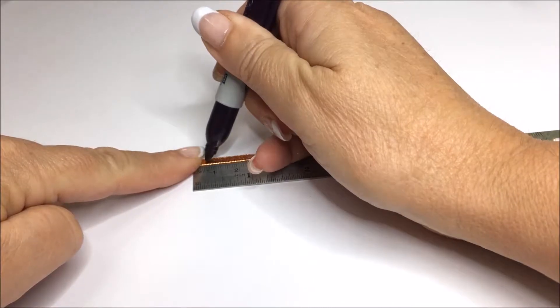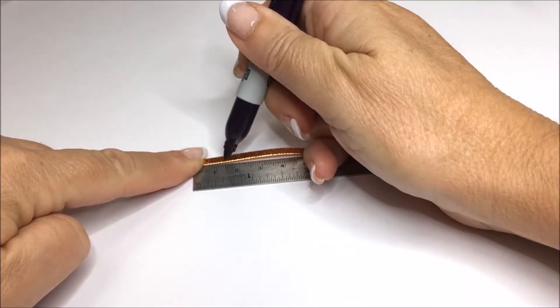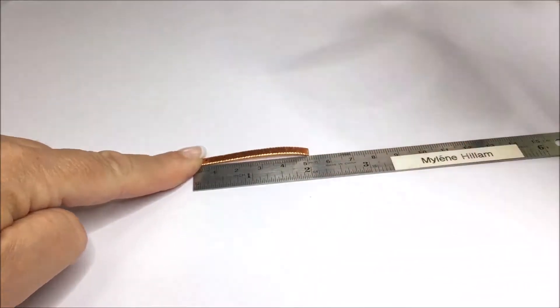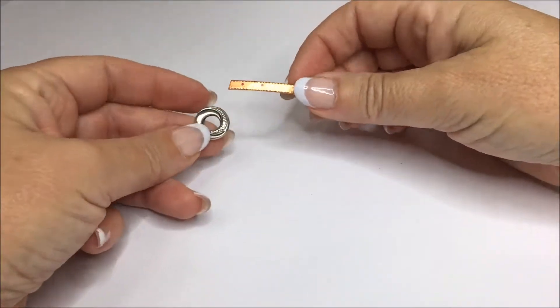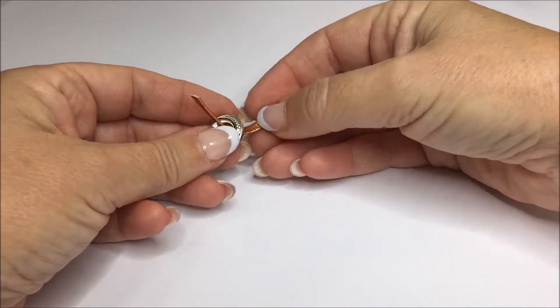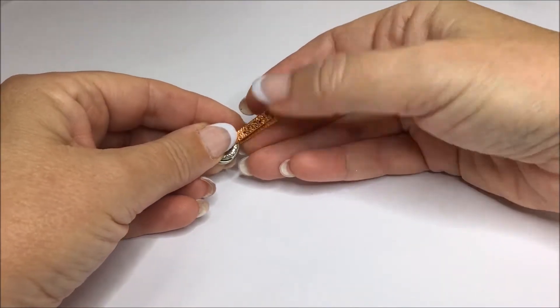Begin by placing a mark at 6mm and 14mm. Thread the metallic lace through the bead frame, fold it in half, and align the ends.